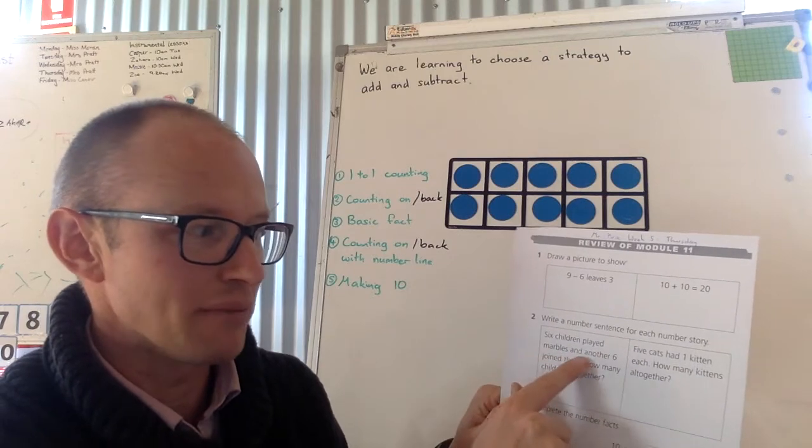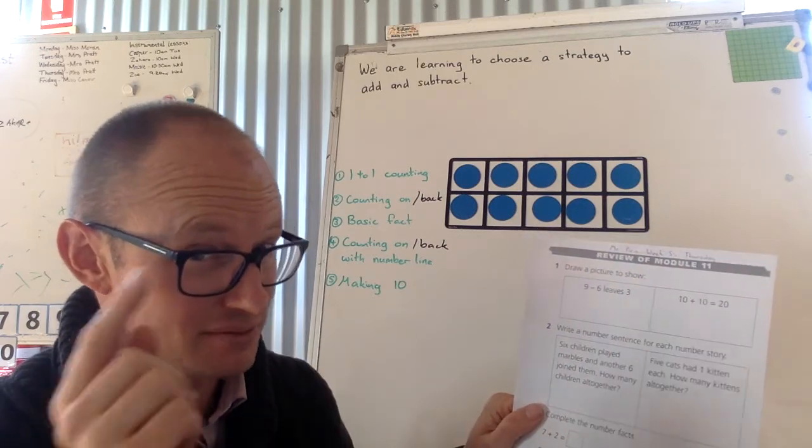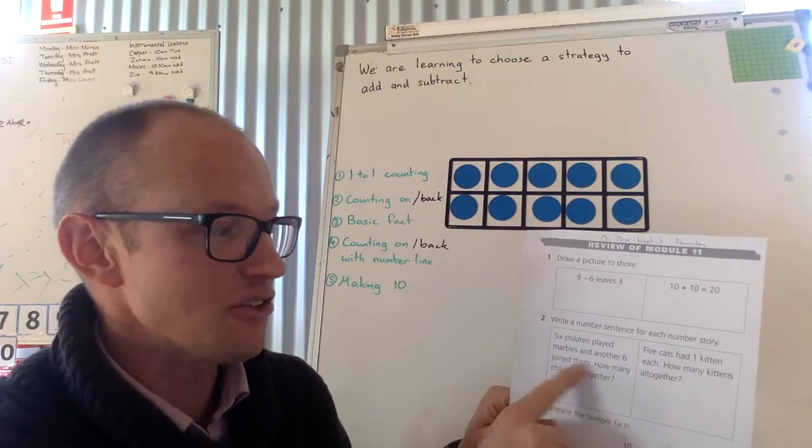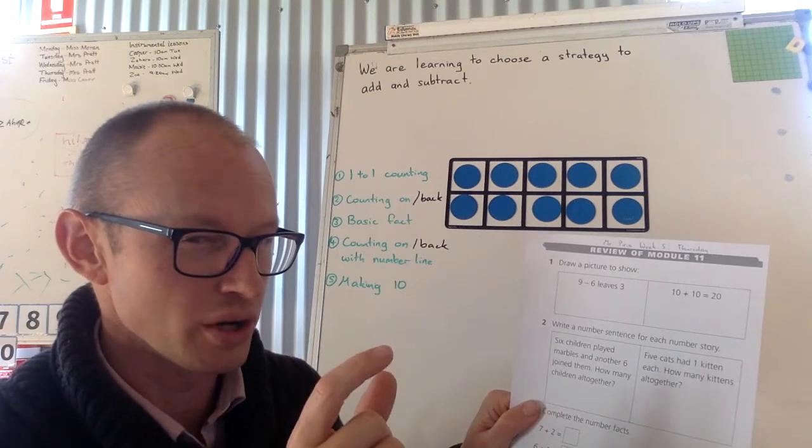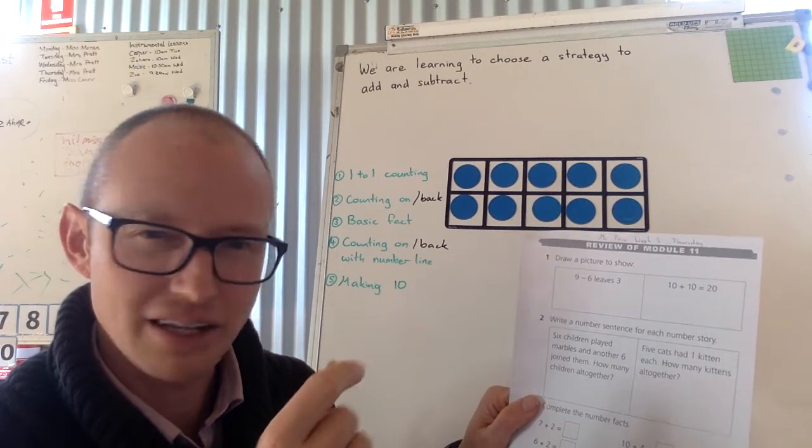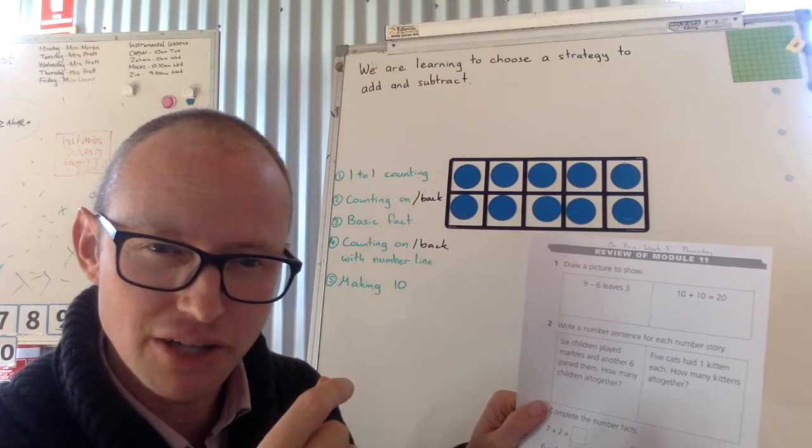So six children played marbles. Okay. So six. Think six in it. Another six joined them. Oh, joined. Six. Is that joining? Is that take away or addition? Is it plus?